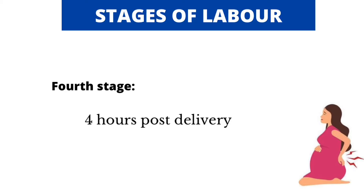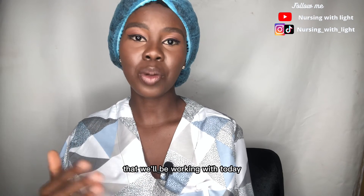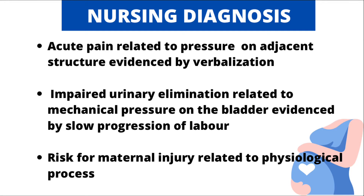Let's get familiar with the nursing diagnoses we'll be working with today — three nursing diagnoses: two actual diagnoses and one risk diagnosis. The first one is acute pain related to pressure on adjacent structures, evidenced by verbalization. During labor, there will be contraction of the uterus. Contraction and relaxation will exert pressure on adjacent structures like the bladder and the rectum, thus causing pain to the mother.